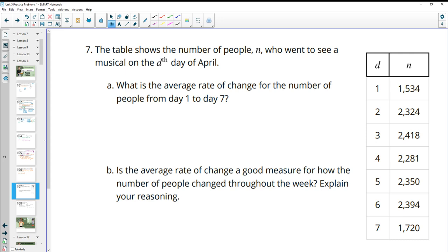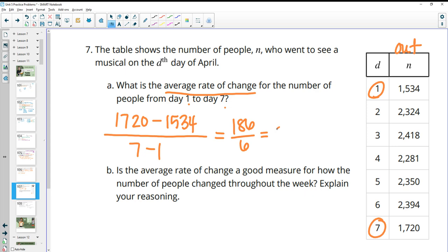Number seven, the table shows the number of people who went to see a musical on the Dth day of April. So the 1st of April, 2nd of April, 3rd of April. What is the average rate of change from day one to seven? Okay, so day one is here. Day seven is here. So average rate of change. Remember, you subtract the output first. Okay, so 1720, the new output minus the original output. And then over the interval. And really, it's subtracting the input. But if you see that it's a six year difference, you could just divide by six. So when we do this, we get 186. When we subtract on top, divided by six gives us 31. So 31 based on the day of the month.